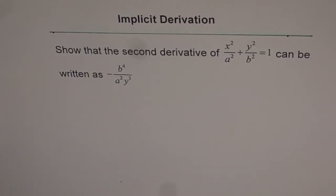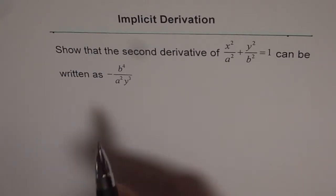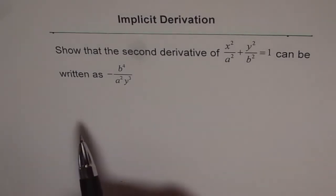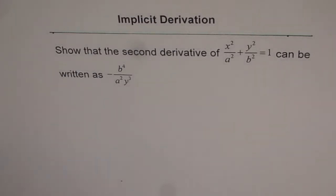Implicit derivation. Show that the second derivative of x squared over a squared plus y squared over b squared equals 1 can be written as b to the power of 4 divided by a squared y cubed. Let's do the derivative first and then find the second derivative. Here a and b are constants.